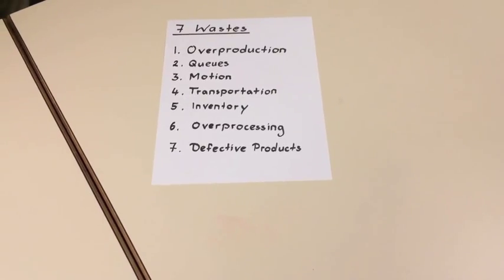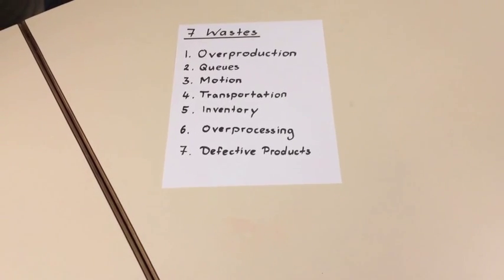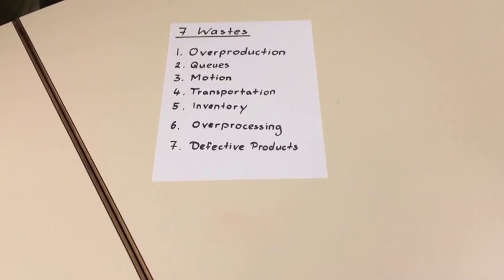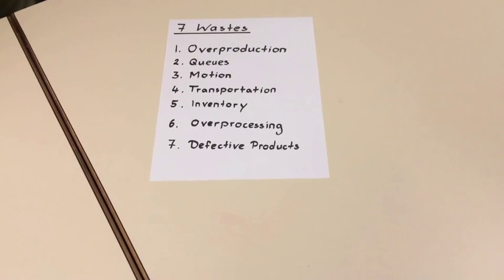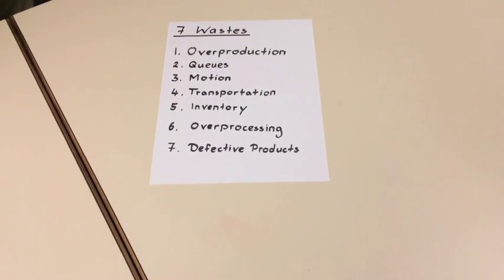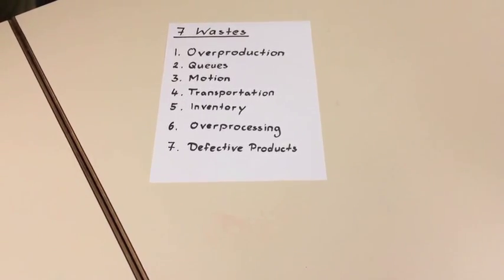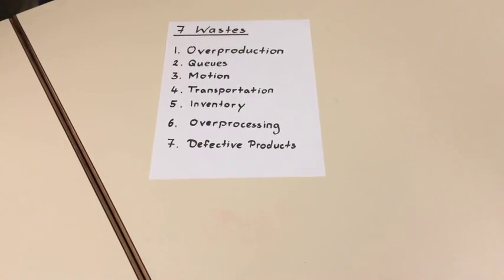Fourth principle is waste reduction. By implementing a just-in-time system, as explained earlier, the 7 wastes—overproduction, queues, motion, transportation, inventory, over-processing, and defective products—are eliminated.